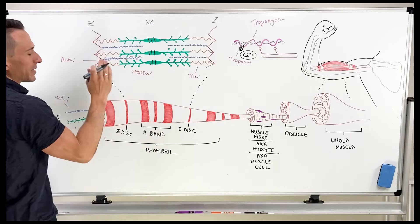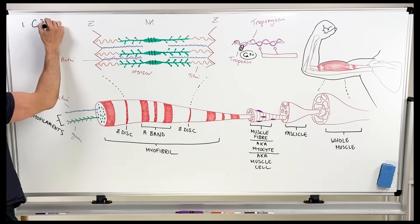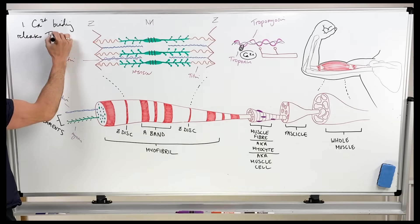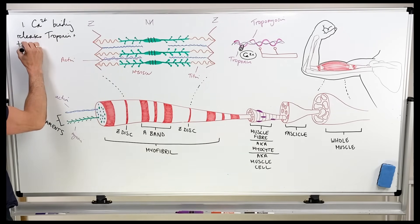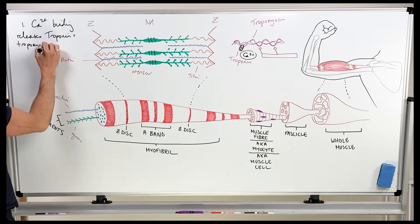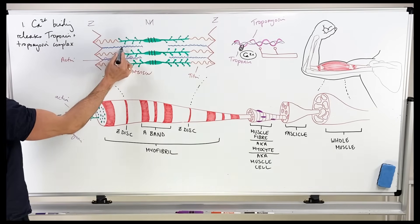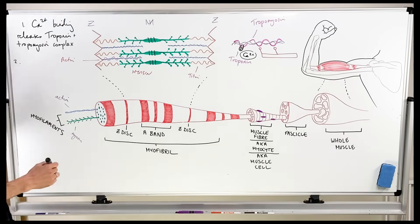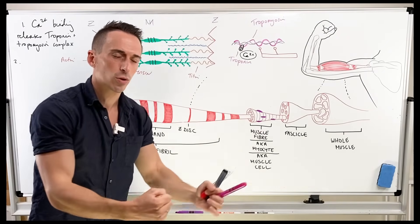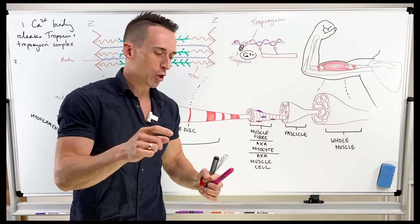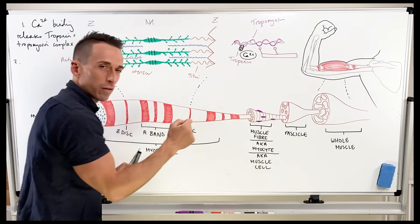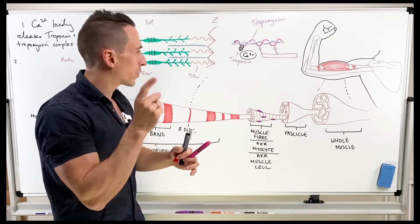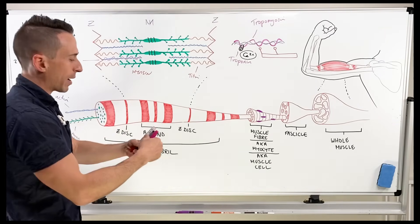The first aspect of the sliding filament mechanism is calcium binding, which releases the troponin and tropomyosin complex, making the actin free for the myosin heads to bind. But the myosin heads still can't bind yet — we need step two. Anytime you want some action to occur, we need ATP. There are huge amounts of mitochondria floating within muscle fibres, and the mitochondria through oxidative phosphorylation and the electron transport chain produce huge amounts of ATP.